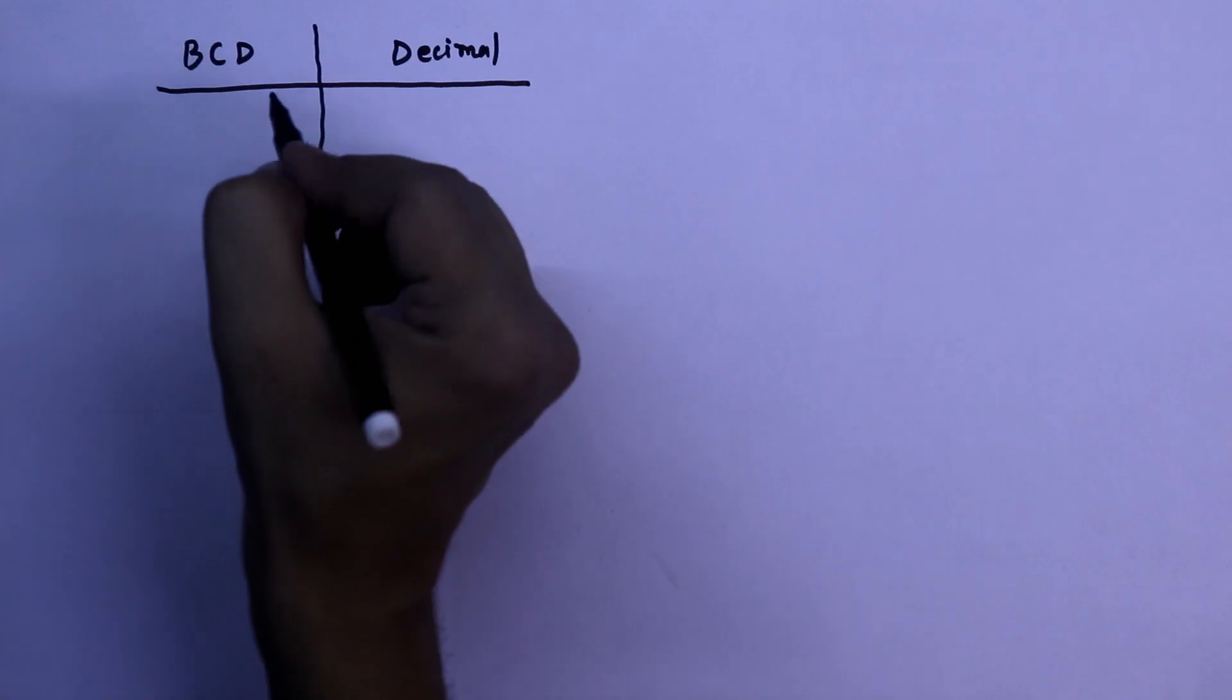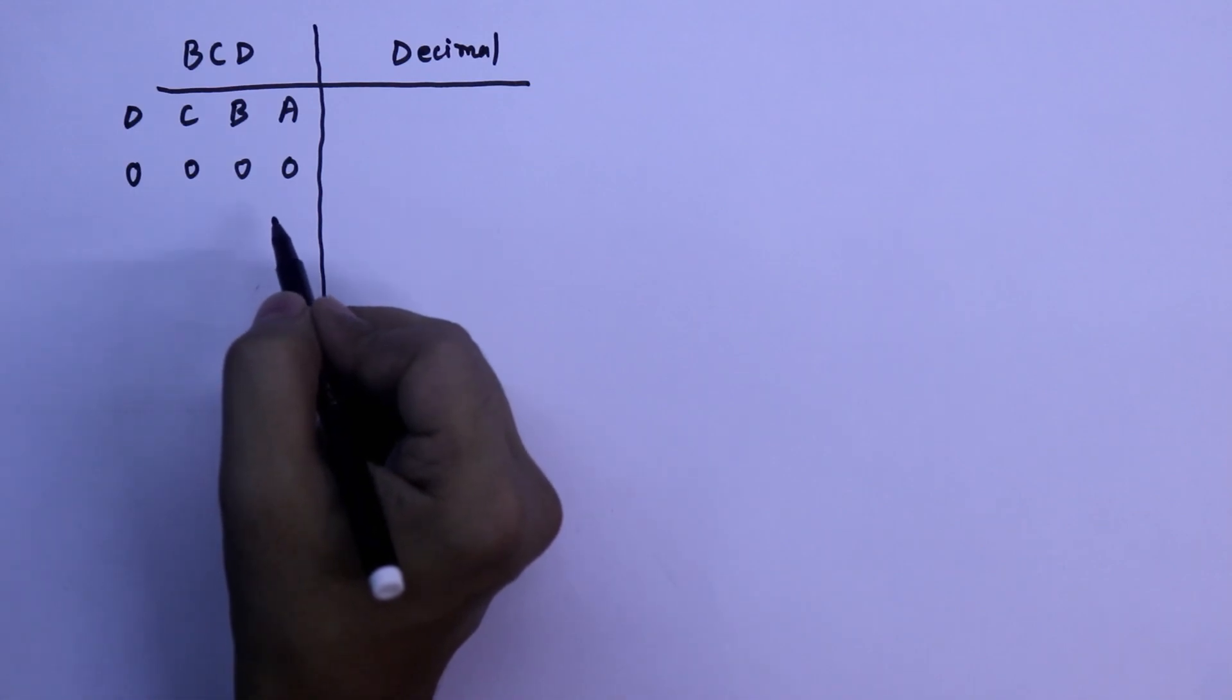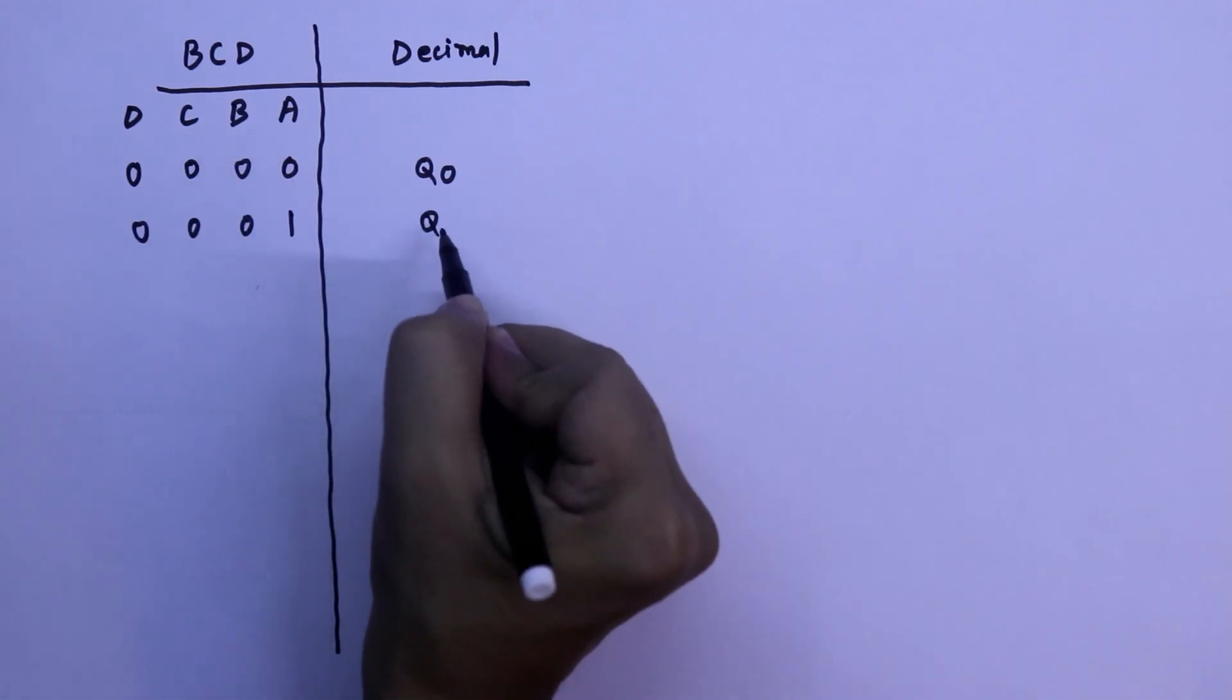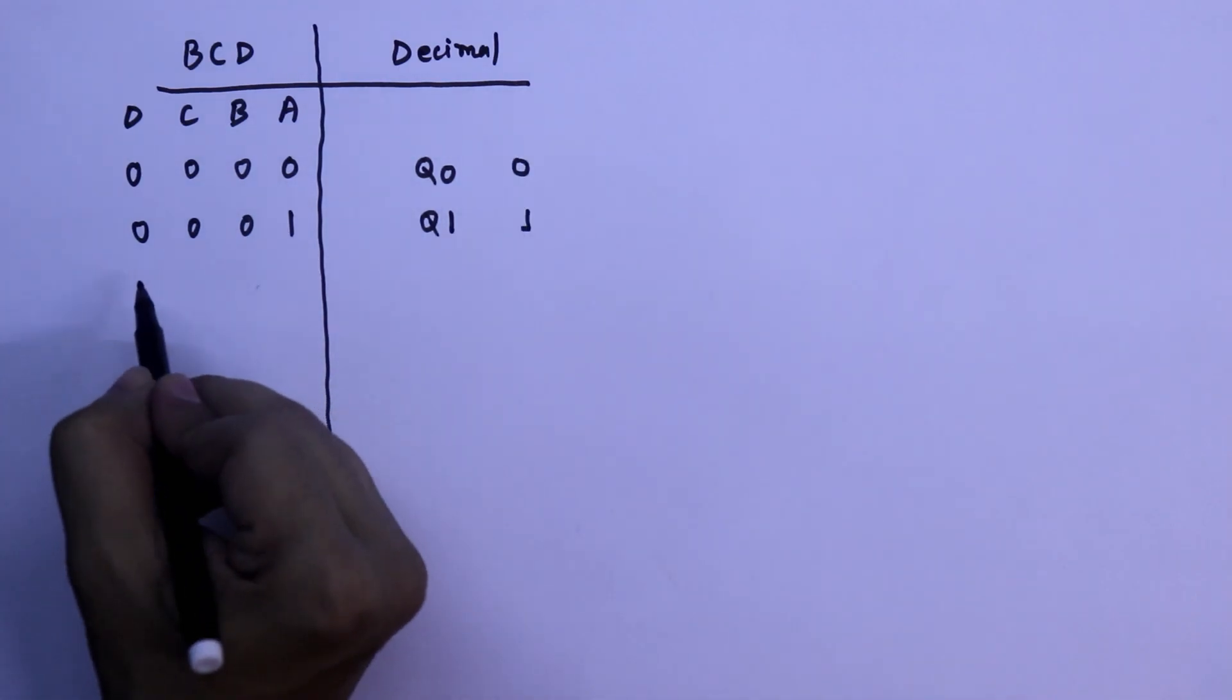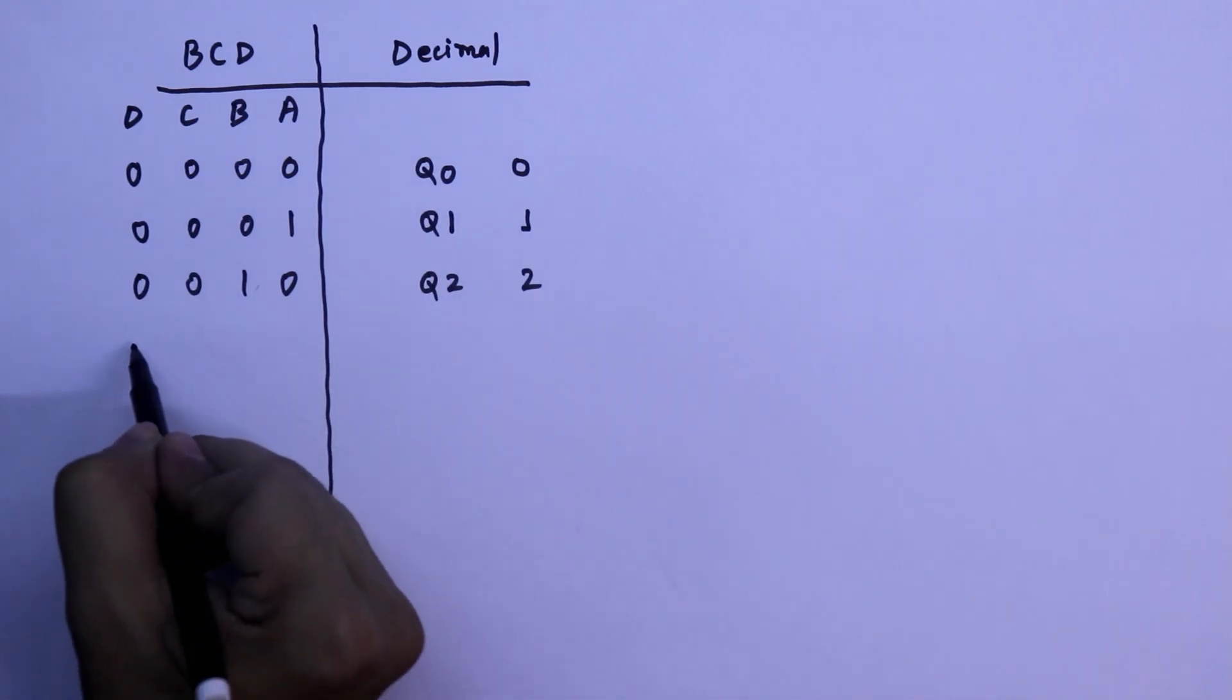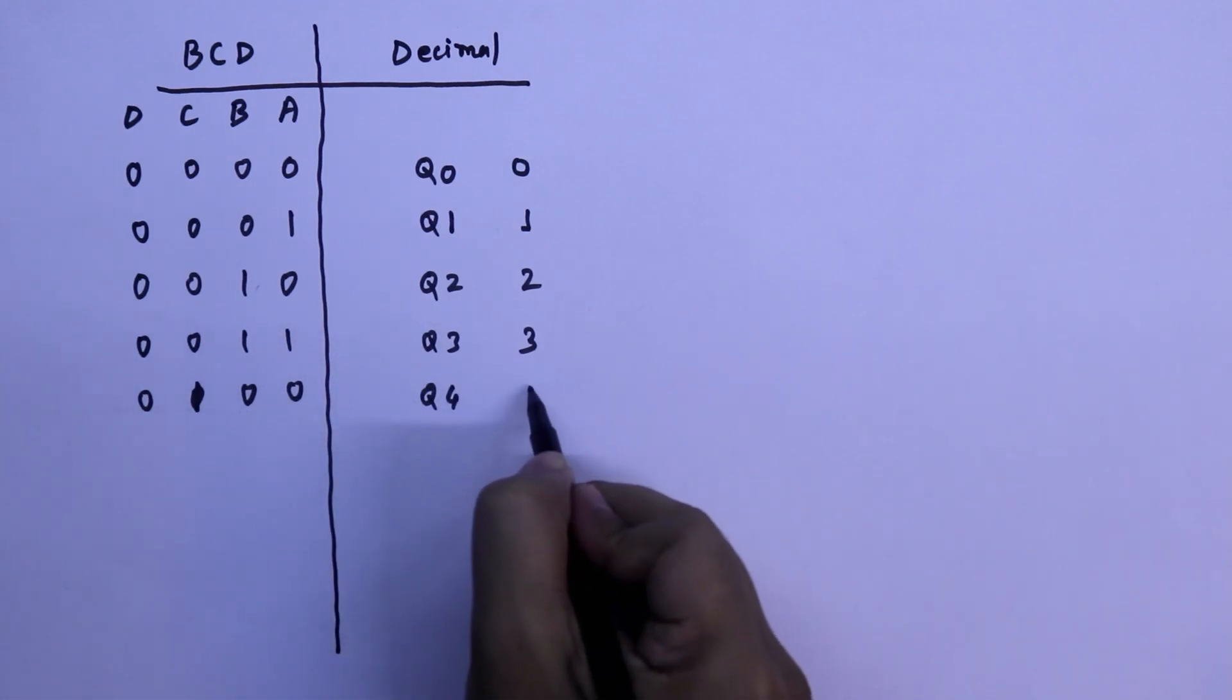BCD to decimal. This is A, B, C, and D. If input is 0, 0, 0, 0, then our output will be Q0. Q0 means first output and Q0 will be high and other output will be low. If the input is 0001, then our output will be Q1, that means it is 1. 0010, it is Q2. Binary 10 means decimal 2. 0011, the Q3 will be high and it is 3. 0100, Q4 will be high and it is equal to 4.